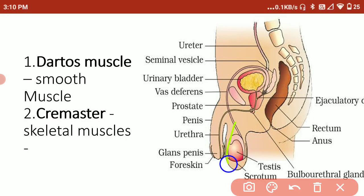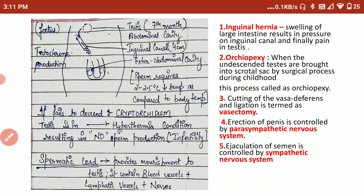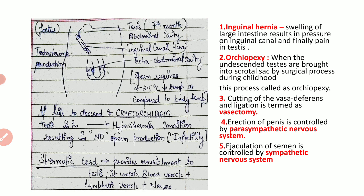Since the scrotum is outside the abdominal cavity, nourishment must be supplied to it. The cord that comprises blood vessels, veins, and lymphatic vessels running from the abdominal cavity to the scrotal sac is known as the spermatic cord. The spermatic cord provides nourishment to the growing sperms and contains blood vessels, lymphatic vessels, and nerves.